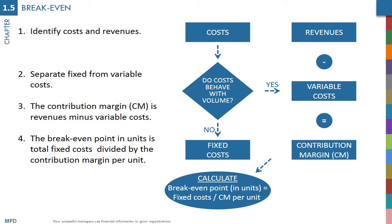The breakeven point can also be expressed as how much revenues need to be generated to have no losses. This number can be calculated in two different ways. First, multiply the number of units at the breakeven point by the sales price per unit.